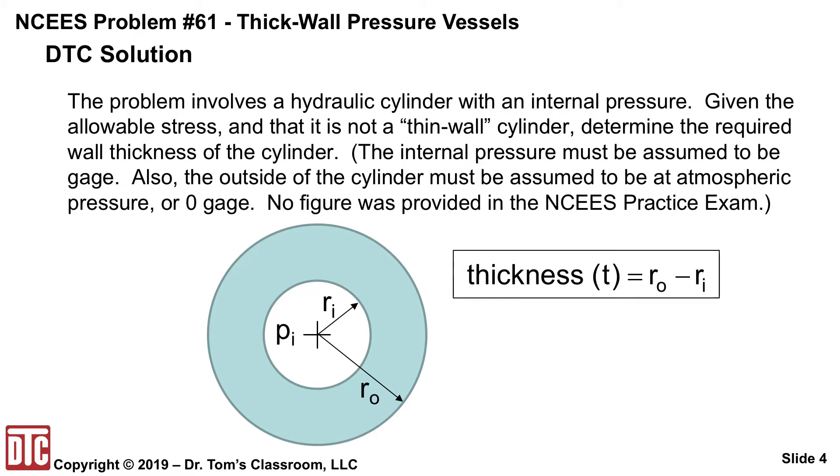Basically the problem involves a hydraulic cylinder with an internal pressure, given the allowable stress, and that it's not a thin-wall cylinder stated in the statement of the problem. Determine the required wall thickness of the cylinder, and that would be symbol T, and that's going to be the outside radius minus the inside radius. We have to assume the internal pressure must be assumed to be gauge. Also, the outside of the cylinder must be assumed to be atmospheric pressure or zero gauge. And there's no figure provided with the practice exam, so we're kind of on our own there.